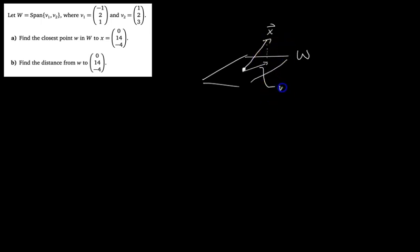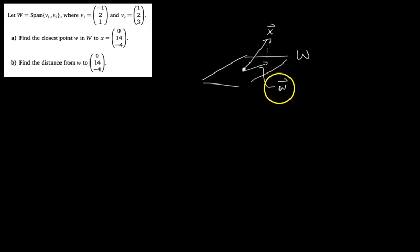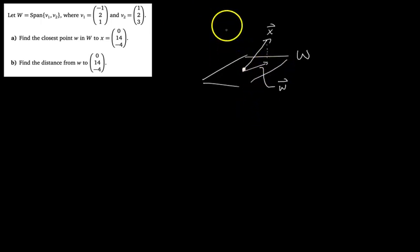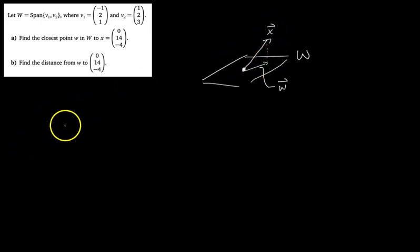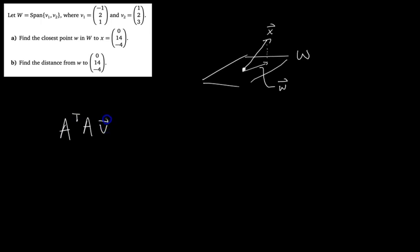Don't get confused between point and vector — they're very similar, just one has an arrow. We're calling this closest vector in W to vector X lowercase w. To find it, all it amounts to is finding the projection of X onto W. You have that handy-dandy formula: A transpose A times some vector v equals A transpose times the vector you're projecting onto the subspace.